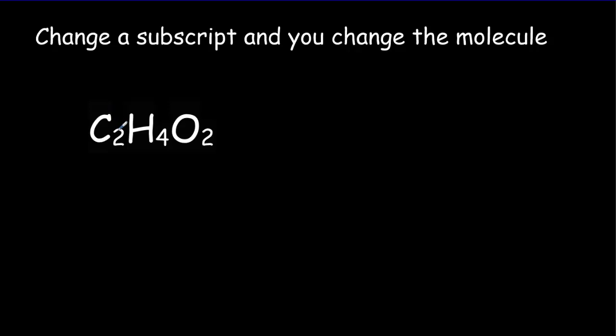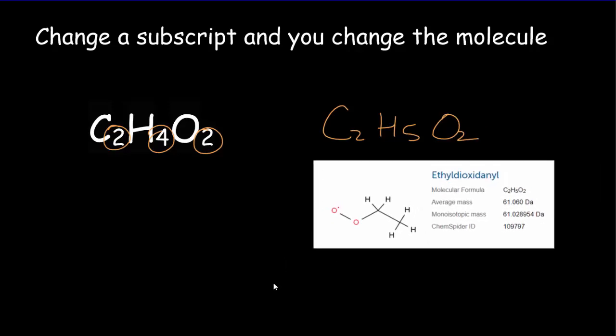Now it's critical to realize that if we change any of those subscripts, we completely change the molecule. If we were to write this as C2H5O2, we would get what's called ethyldioxynol. It has totally different chemical properties. For a given molecule, we've got to keep those subscripts the same, otherwise we totally change the molecule.